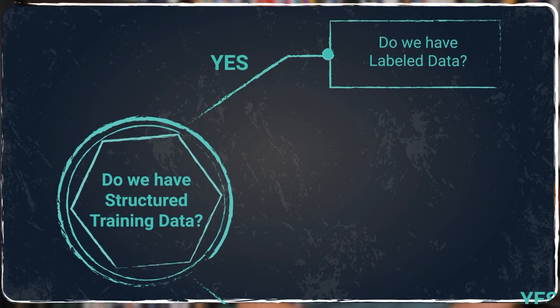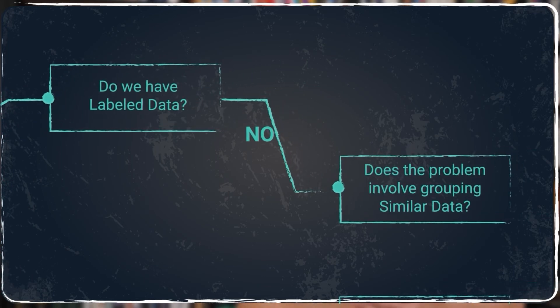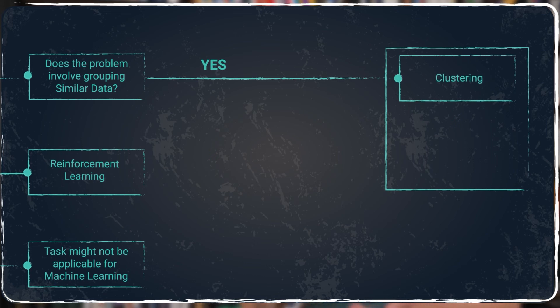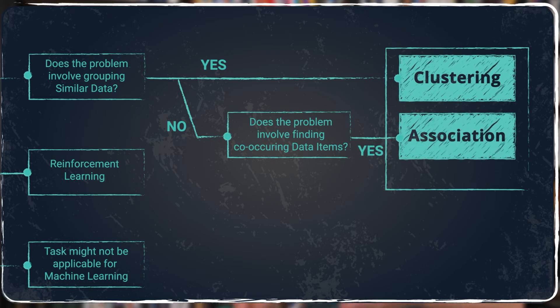Do we have labeled data? If our answer is no, we have to ask ourselves if the problem involves grouping similar data. If the answer is yes, it may be clustering. If the answer is no, then we ask if the problem involves finding co-occurring data items, which may be an association. Both clustering and association point to unsupervised learning.